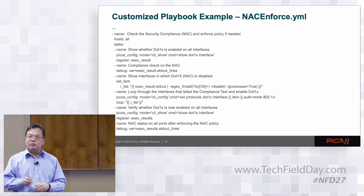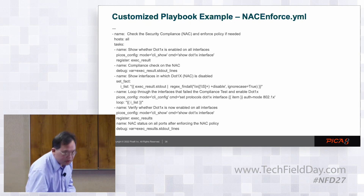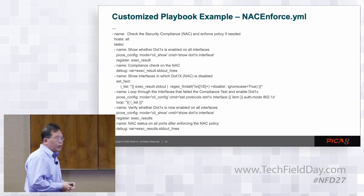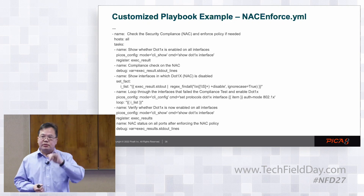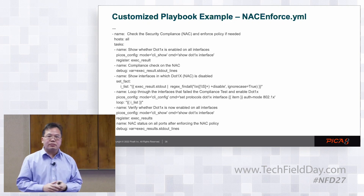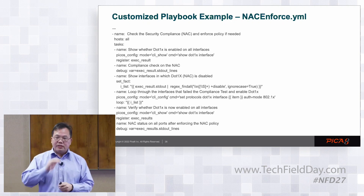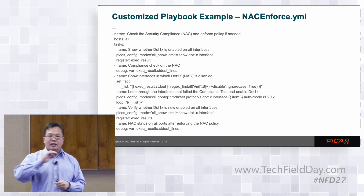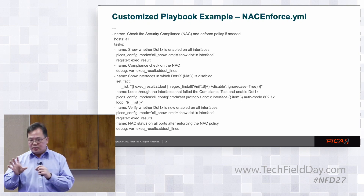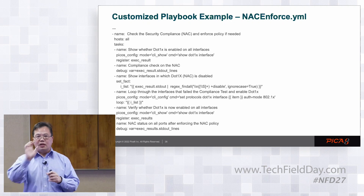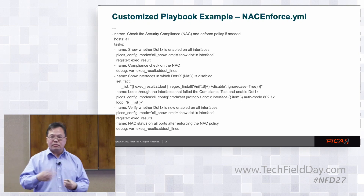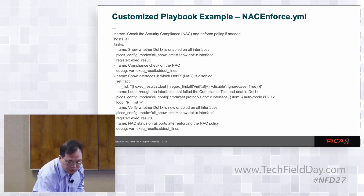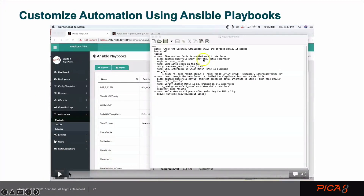You can customize it — we make it really simple. This script has six procedures: it starts by reading the port status, identifies the keywords, checks if 802.1X is turned on or off, and if it's off, turns it on. Once you download it, this is the procedure — you just follow it.